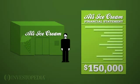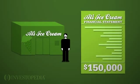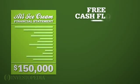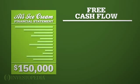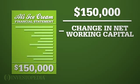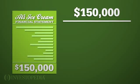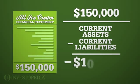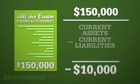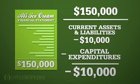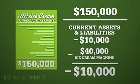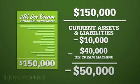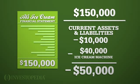Al's financial statements show that he earned $150,000 last year. To calculate his free cash flow, Al would subtract his change in net working capital for the year — current assets minus current liabilities equaling $10,000 — and his capital expenditures, $40,000 for a new ice cream machine. These numbers represent the cash that went out of the business.